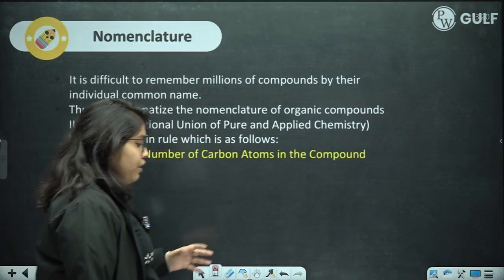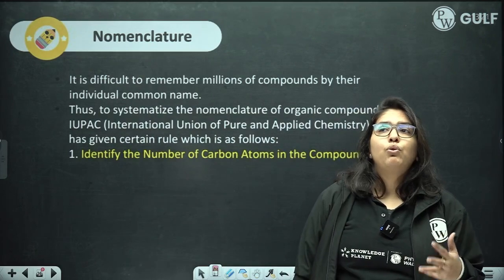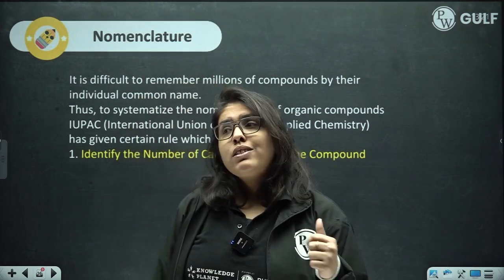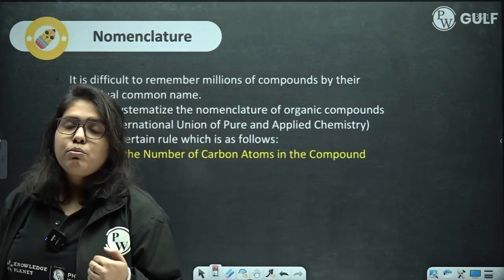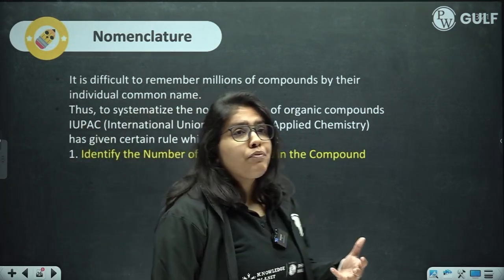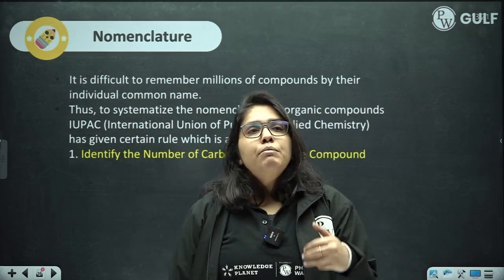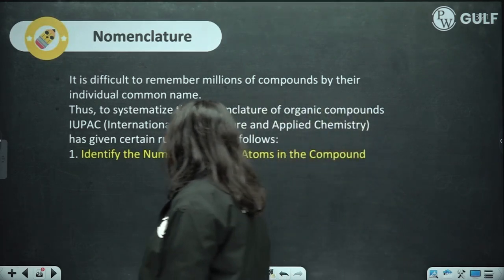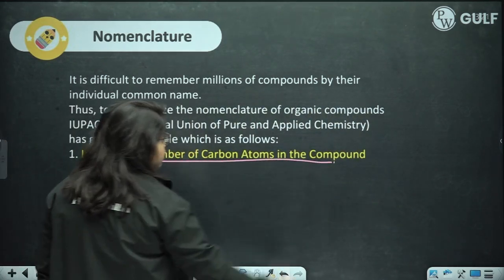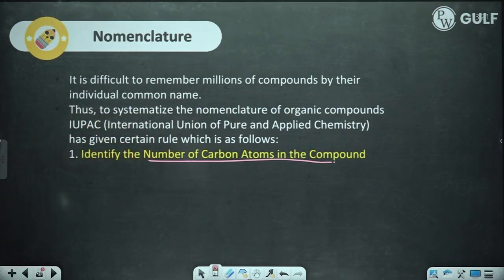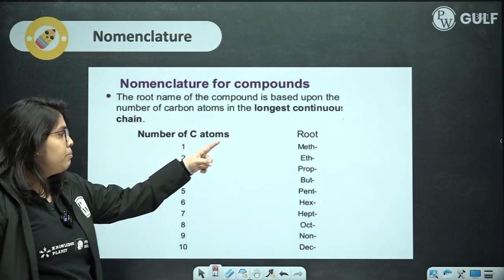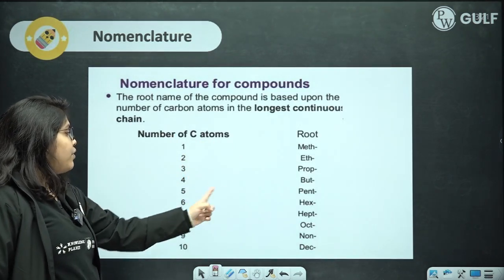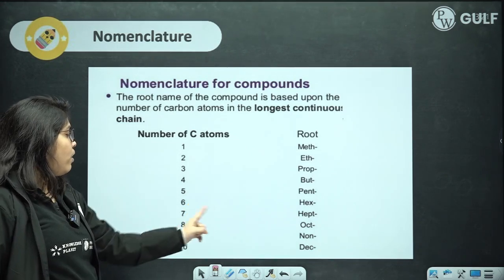Nomenclature — how do we name a given compound? Just as your name identifies you, compounds need names too. The first step is to identify the number of carbon atoms: 1 = meth, 2 = eth, 3 = prop, 4 = but, 5 = pent, 6 = hex, 7 = hept, 8 = oct, 9 = non, 10 = dec.